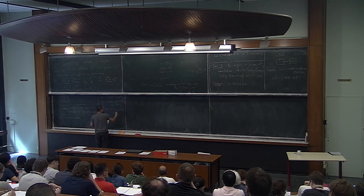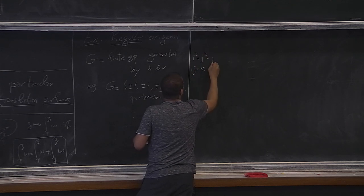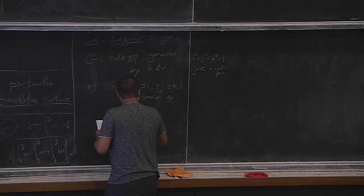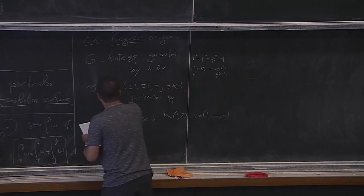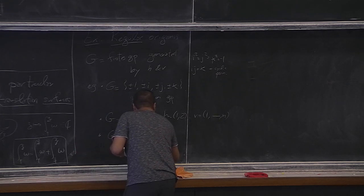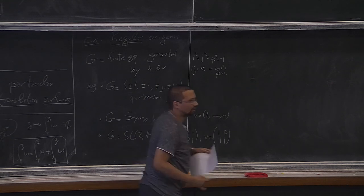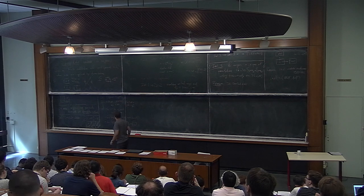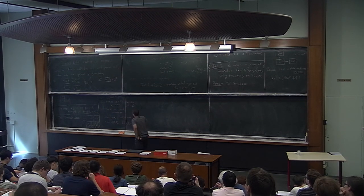I was giving the quaternion group as an example, where i, j, k satisfy the usual relations plus cyclic permutations. Of course, you can also take the symmetric group with a transposition and a full cycle, or SL₂(𝔽_p) with two parabolic matrices — those generate SL₂. So these are examples of groups generated by two elements, and out of that I'm going to construct examples.